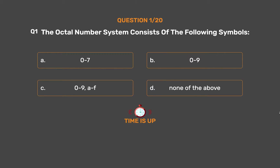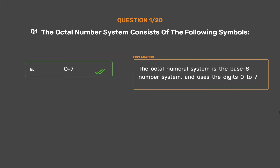The correct answer is Option A: 0 to 7. The octal numeral system is the base-8 number system and uses the digits 0 to 7.